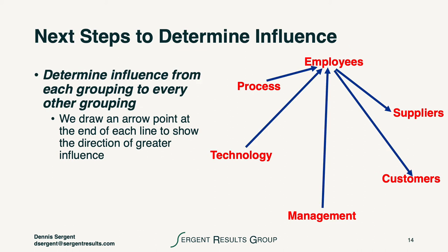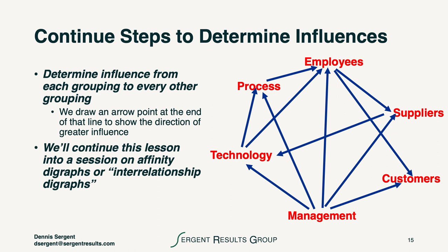We continue clockwise around the groupings until every pair has been compared. As we go from employees to customers, management, technology, and process, we find different directionality. Employees have greater influence on suppliers and customers, but process, technology, and management have greater influence on employees. We continue that circuit around, and ultimately we end up with influences depicted from every group — showing who influences whom.